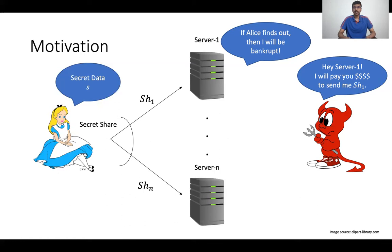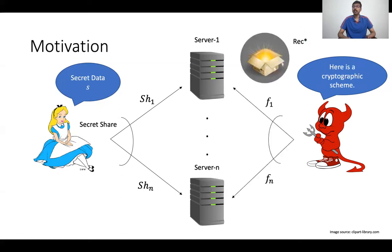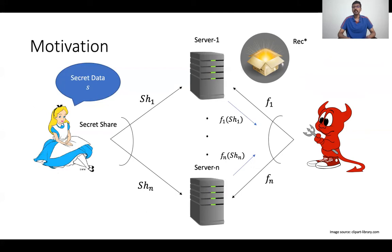So learning about the server's hesitancy, the adversary comes up with a pretty clever cryptographic scheme. This scheme has the following components: n functions f1 up to fn, called collector functions, as well as a reconstruction box. All that the servers now have to do is to apply these collector functions on these shares and give it to the adversary. And the adversary now pays the servers with the monetary reward that it promised.